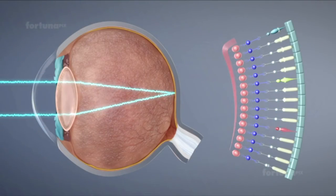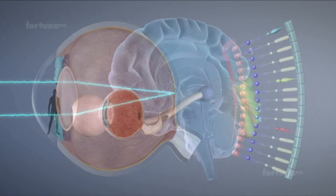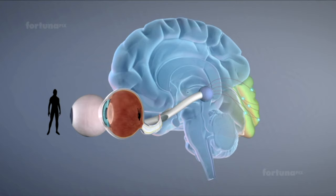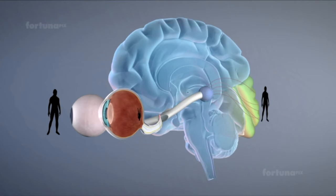In the retina, light impulses will be converted to electrical signals. These signals will be transmitted through the optic nerve to the visual center of the brain in the occipital lobe. The brain will translate these electrical signals into an upright image.